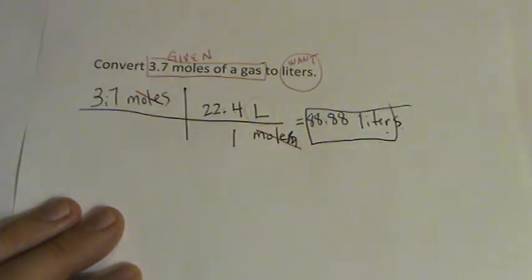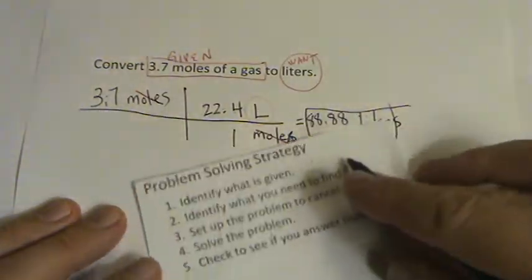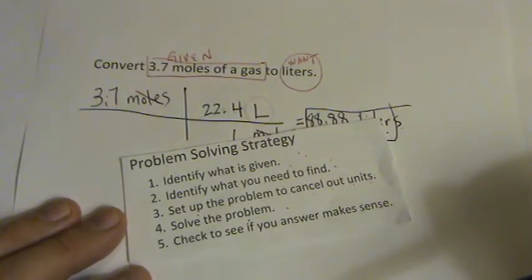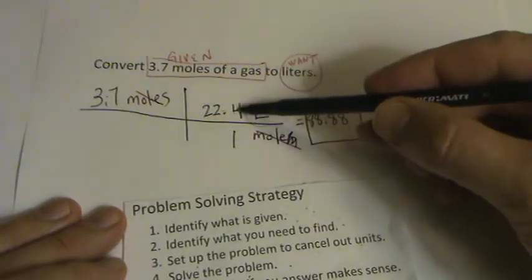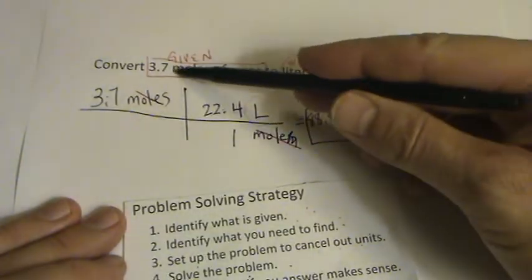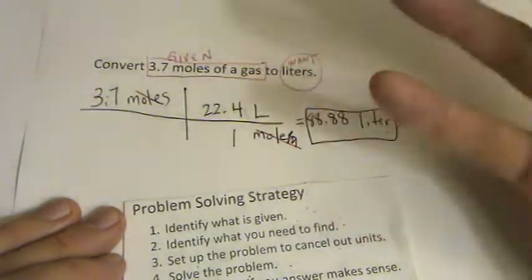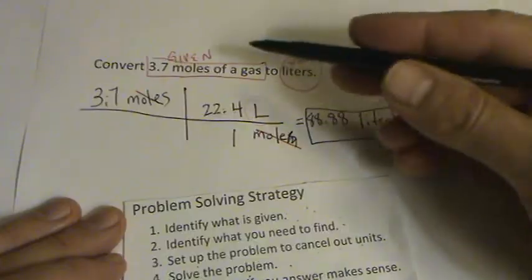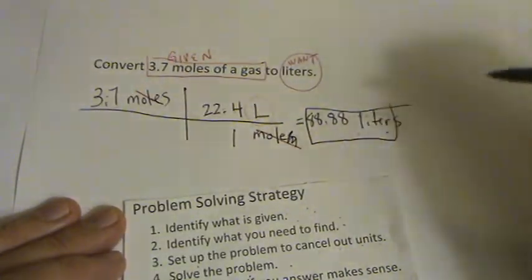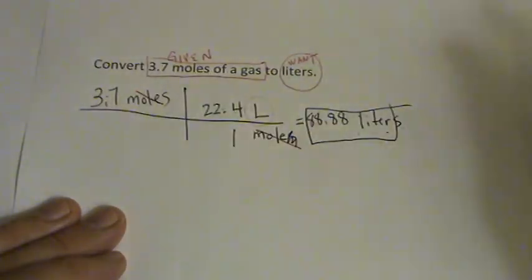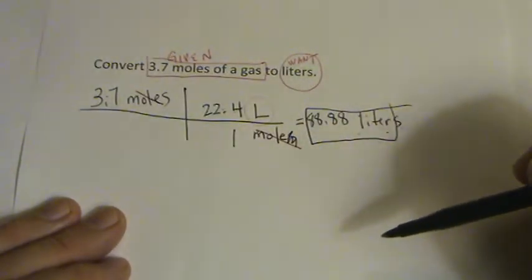The last step, we've just solved the problem, is to check and see if our answer makes sense. Here, we know that one mole is about 20 liters. So 3.7, say about 4. So if we have 4 moles, that should be about 4 times 20, right around 80. And that seems to work out pretty well. We're close enough that we can be confident in our answer.